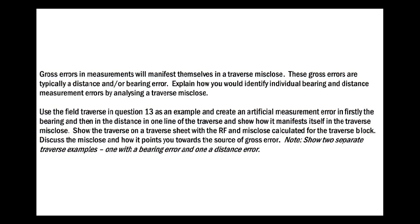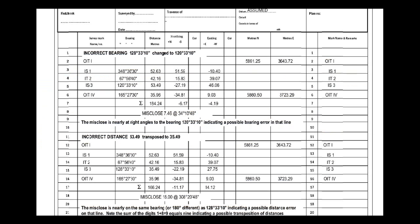Just to put some context around things: gross errors in measurements will manifest themselves in a traverse misclose. Gross errors are typically a distance and/or bearing error. We're required to explain how you would identify individual bearing and distance measurement errors by analyzing a traverse misclose. We need to show two separate examples — one with a bearing error and one with a distance error — on a traverse sheet with the RF misclose calculated.